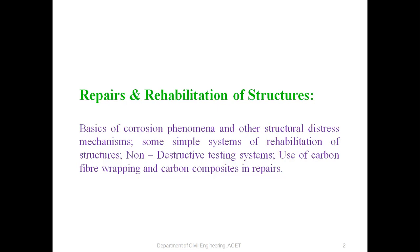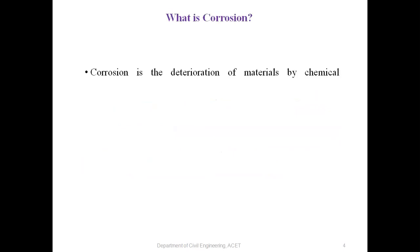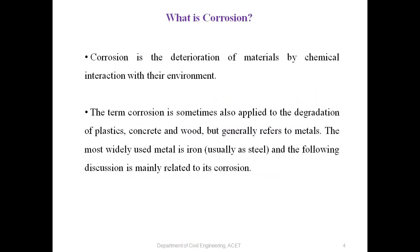The first point is basics of corrosion phenomena and other structural distress mechanisms. We should know first what corrosion is: the deterioration of materials by chemical interaction with their environment. The term corrosion is sometimes also applied to the degradation of plastics, concrete, and wood, but generally refers to metals. The most widely used metal is iron, usually as steel, and the following discussion is mainly related to its corrosion.